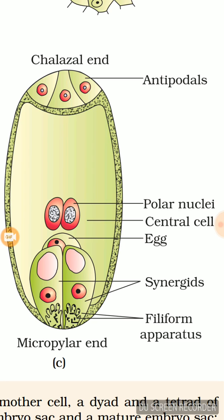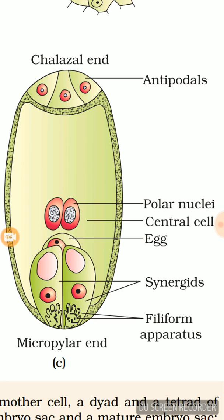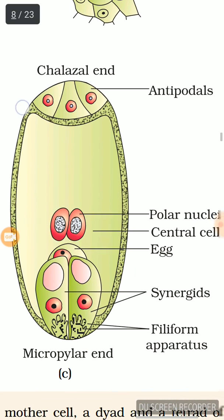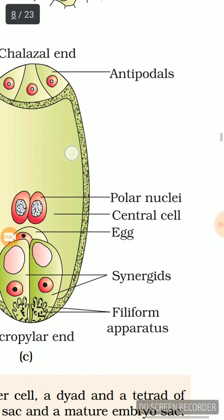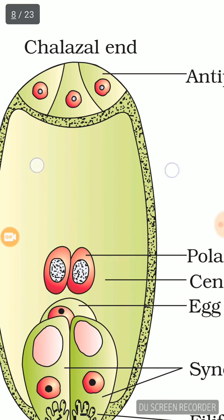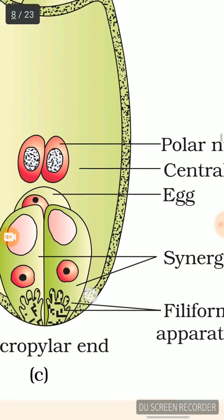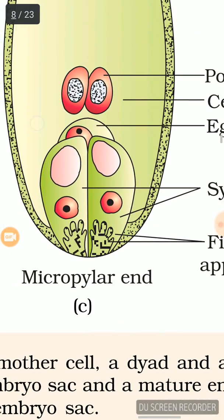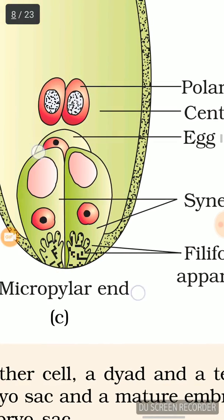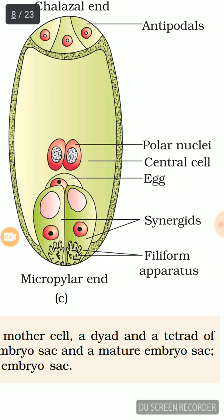In the chalazal end, antipodals are present. To find out which end is the micropylar end, we should look for the position of the egg. If the egg is present at one end, then that end is known as the micropylar end. So we can differentiate between the micropylar end and the chalazal end. The chalazal end has three antipodals, and the micropylar end has one egg and two synergids.